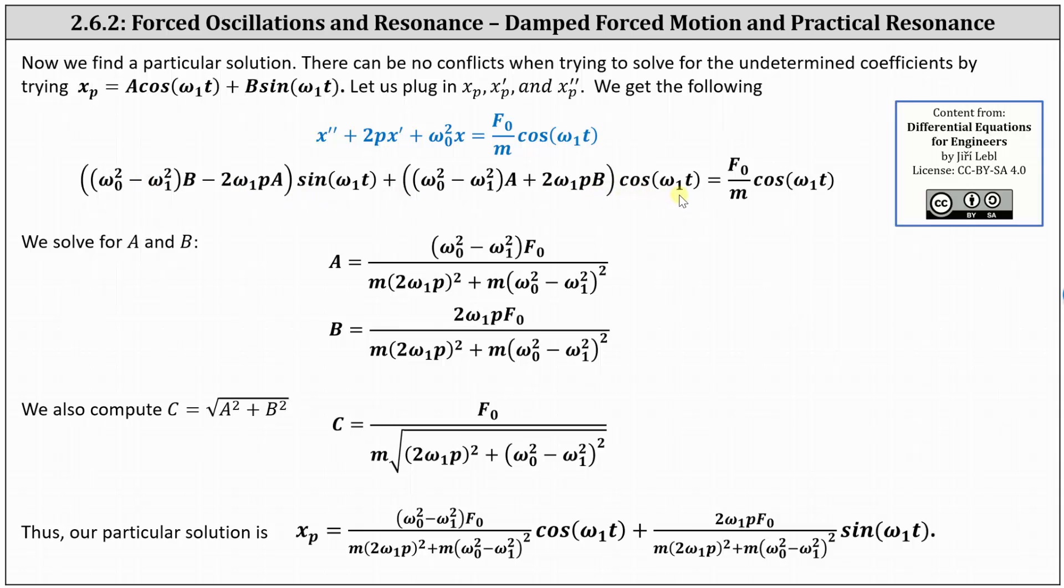And now we equate the coefficients. The coefficient of sine of omega one T is equal to zero. The coefficient of cosine of omega one T must equal F sub zero divided by M. Solving for A and B, we get the results shown below.